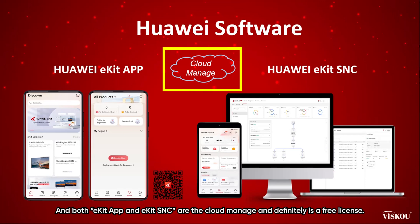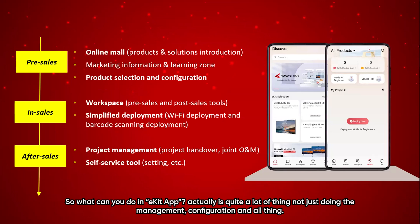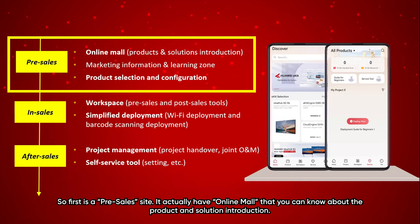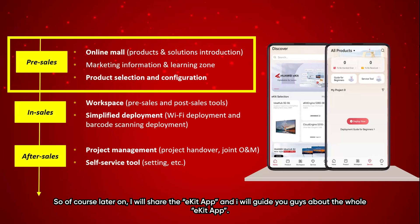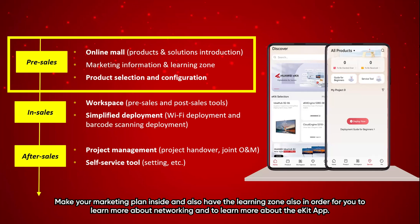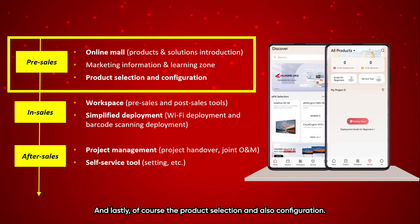Both eKit app and S&C are cloud managed and definitely free license. What you can do in eKit app is quite a lot — not just management and configuration, but also pre-sales, in-sales, and after-sales services. For pre-sales, there is an online mall where you can learn about products and solution introductions, marketing information for conducting marketing activities, a learning zone to learn about networking and eKit, and product selection and configuration.